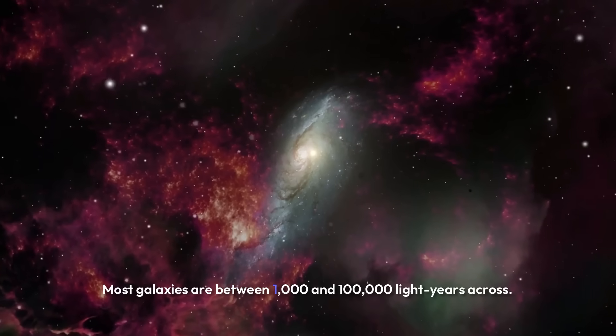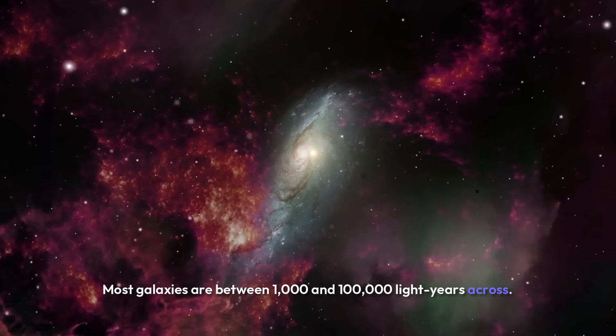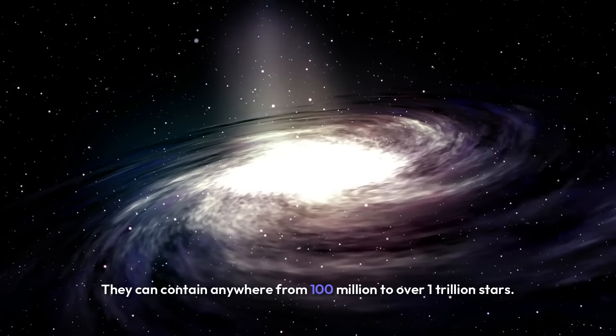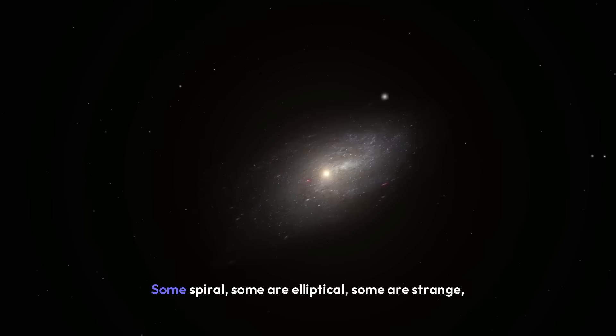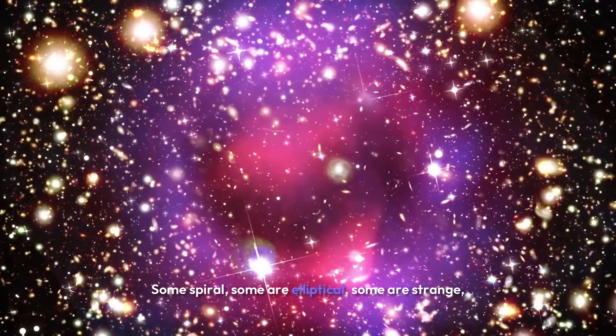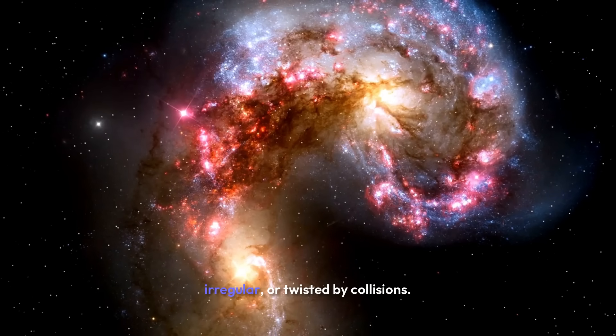Most galaxies are between 1,000 and 100,000 light years across. They can contain anywhere from 100 million to over 1 trillion stars. But not all galaxies look the same. Some spiral. Some are elliptical. Some are strange, irregular, or twisted by collisions.